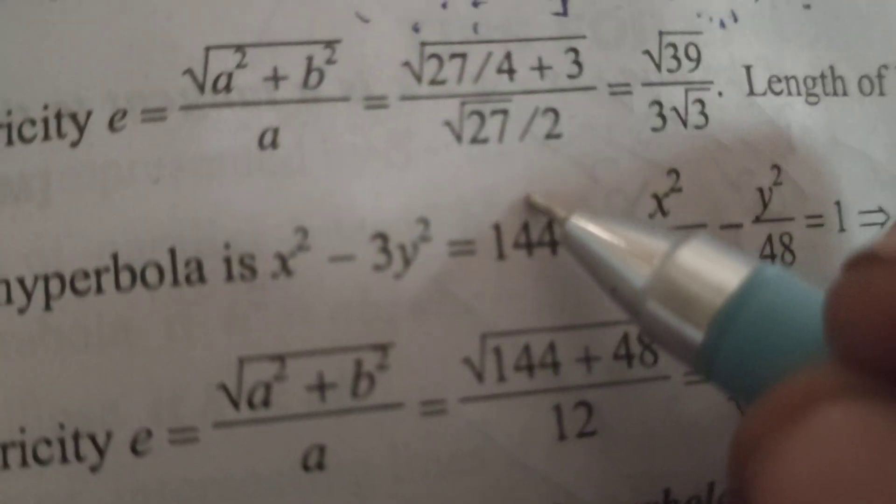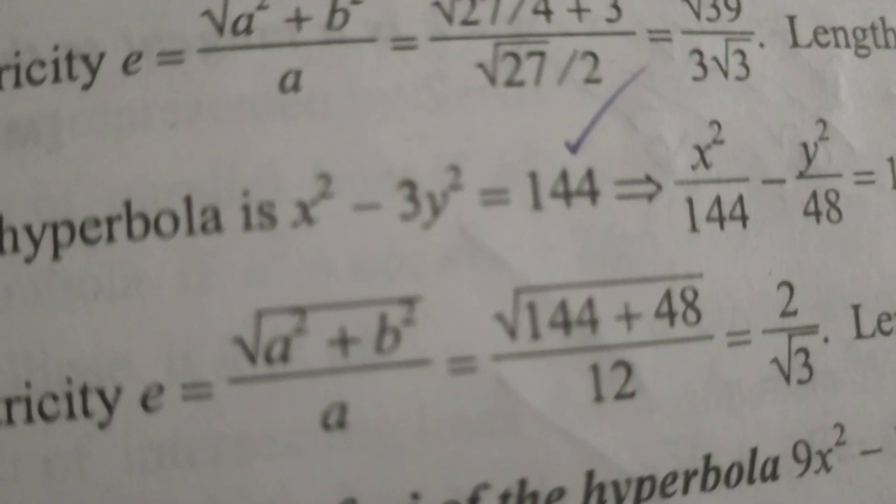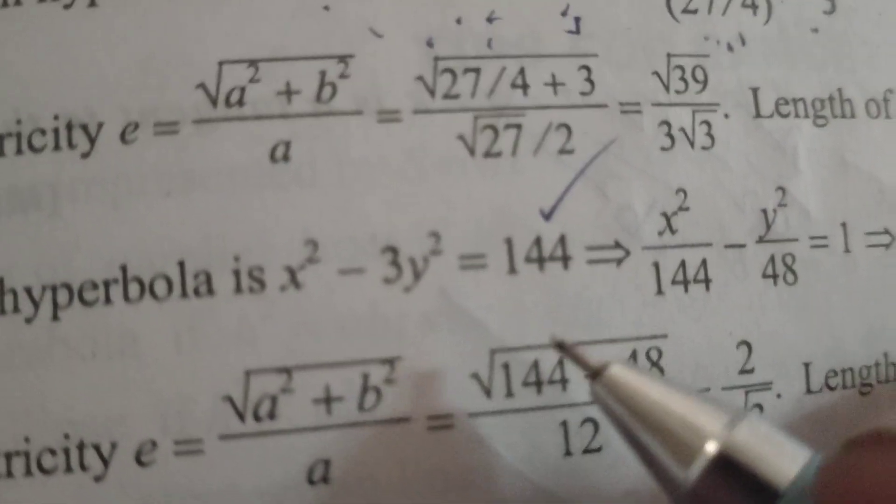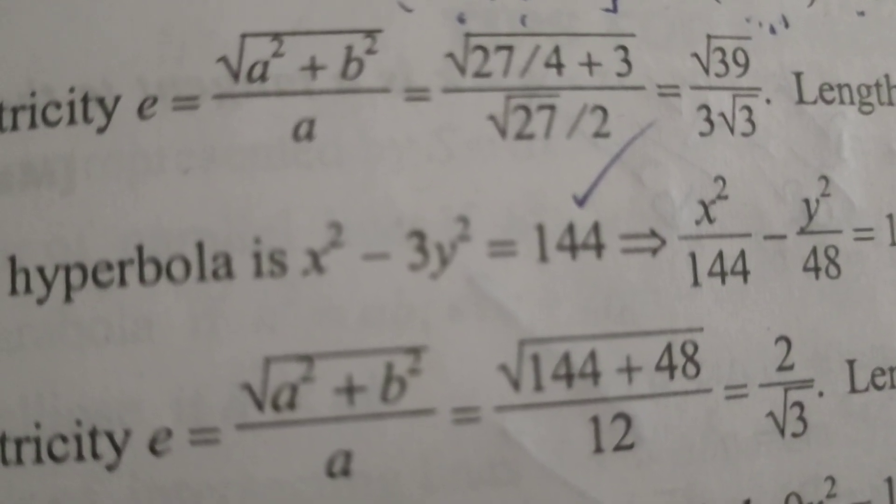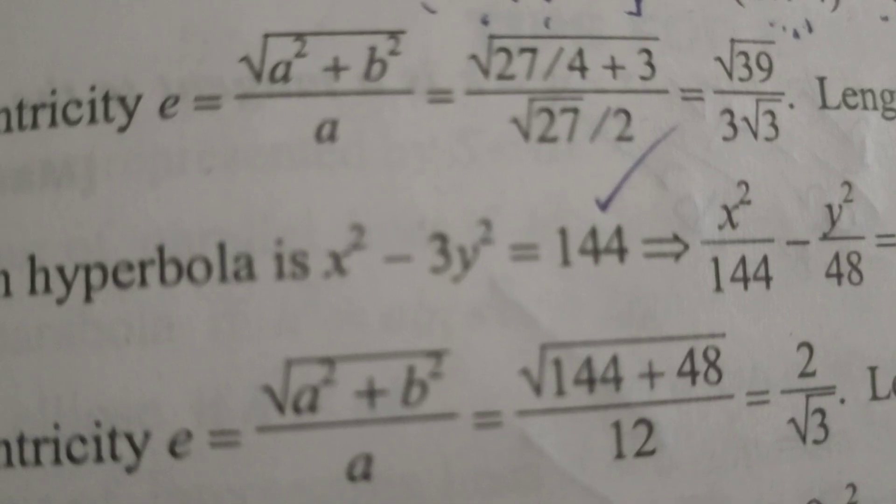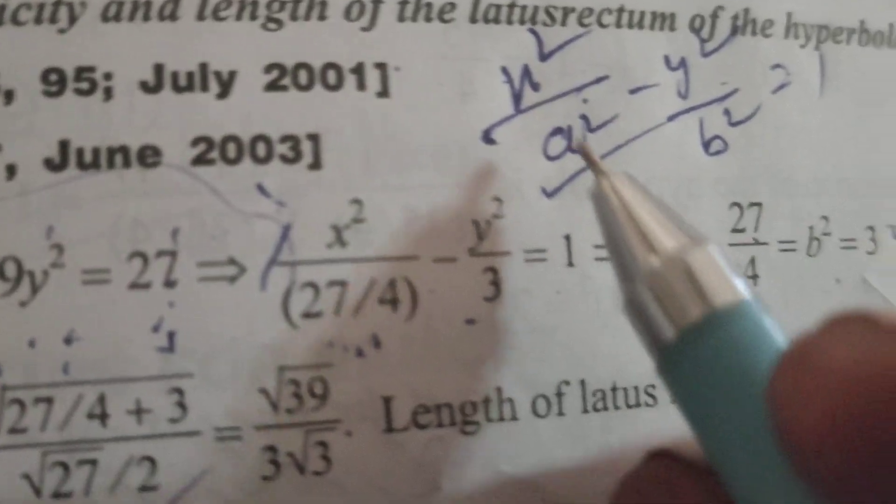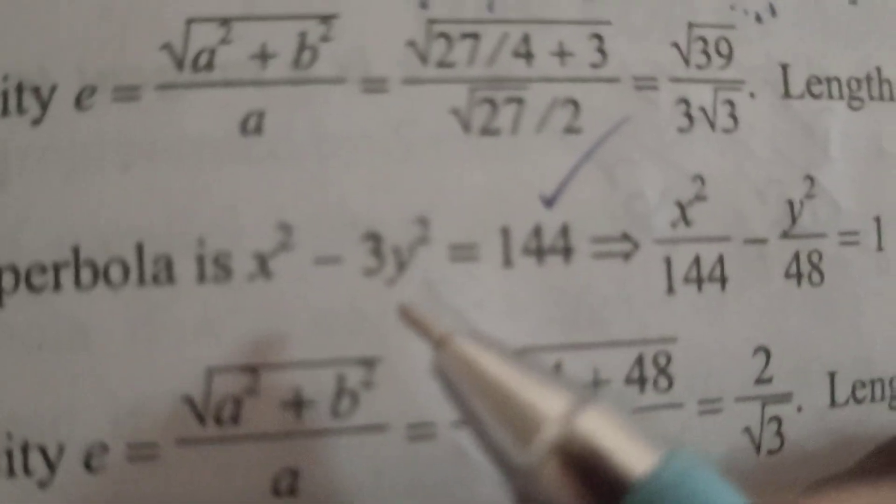First, write the given hyperbola equation x² - 3y² = 144, converting it into standard hyperbola form according to the formula x²/a² - y²/b².